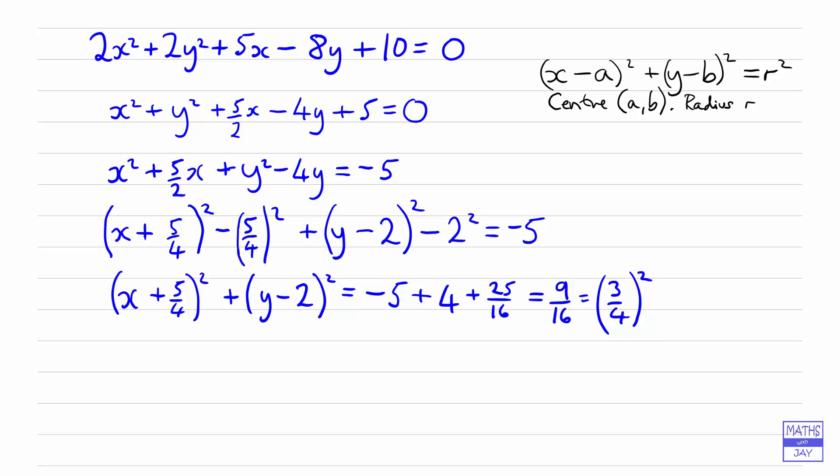So now it's just a matter of writing down what the centre is. Be careful that you get the right signs here, notice that in the formula for the equation of the circle we've got x minus a all squared which means that when we write down the x coordinate we want to write down minus 5 over 4 and when we write down the y coordinate instead of minus 2 it's plus 2, so the opposite signs to the ones that you've got in the working there. And then our radius is simply going to be square root of r squared which is just 3 quarters. So centre is minus 5 over 4, 2 and the radius 3 quarters.